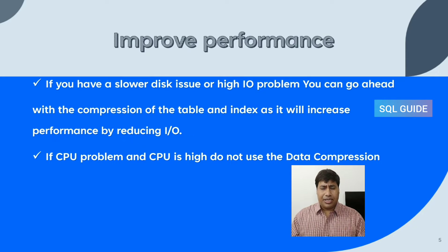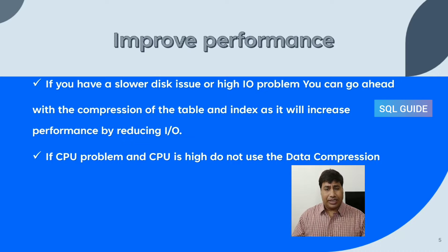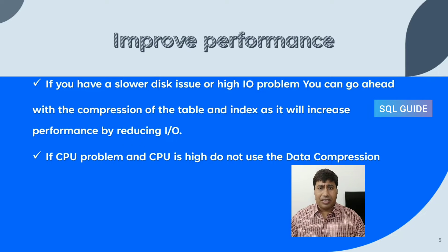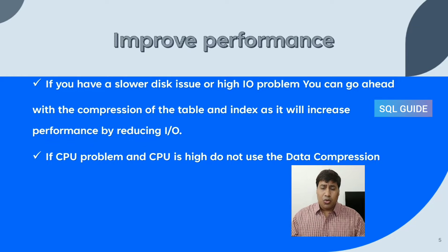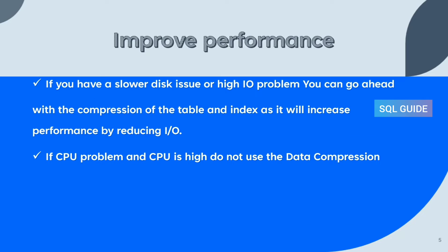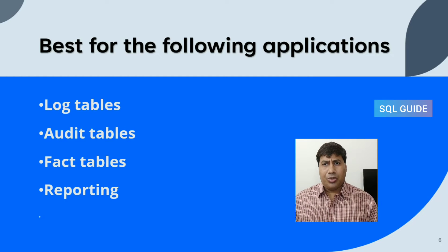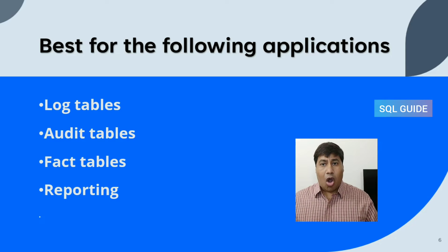If you have a slower disk issue or high I/O problem, you can go ahead with compression of the table and index, as it will increase performance by reducing the I/O. You have to keep in mind: if CPU is high, do not use data compression. Compression can be used for the following: application log tables, audit tables, fact tables, and reporting tables.